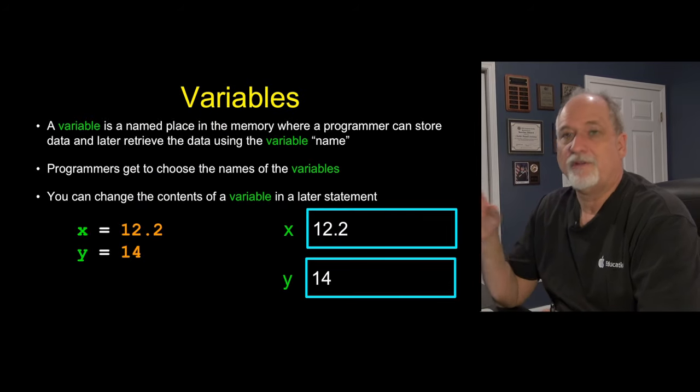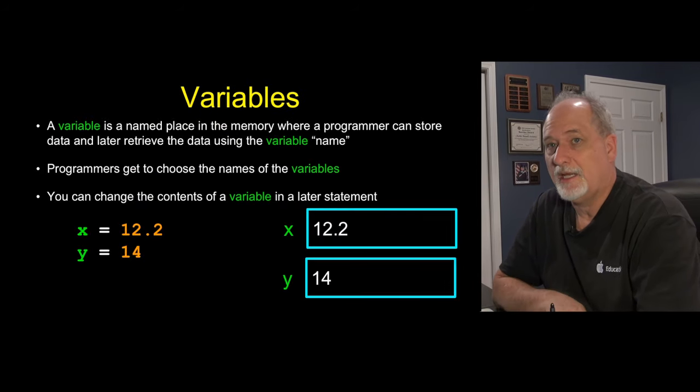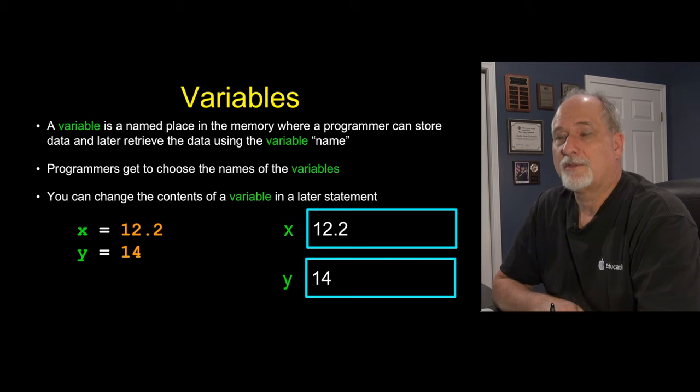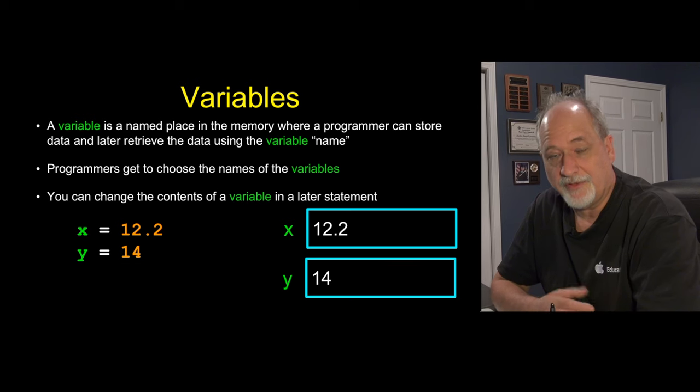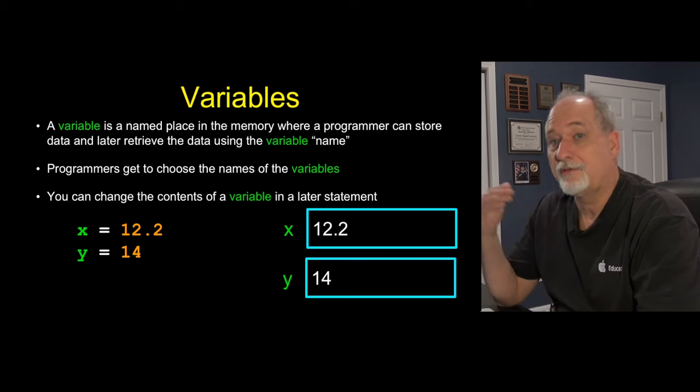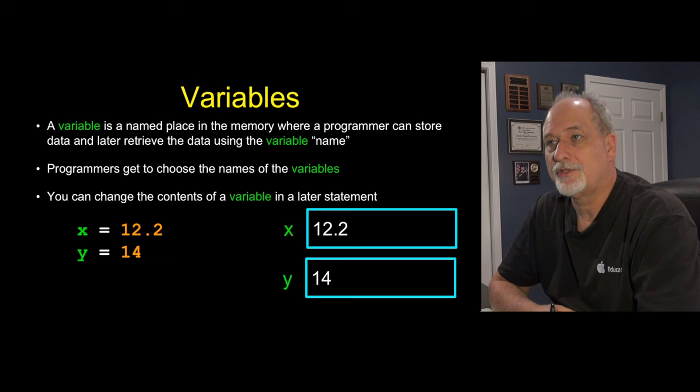Variables are the third building block. And that is a way that you can ask Python to allocate a piece of memory and then give it a name. And you can put stuff in that. Sometimes you just put one value, later we'll see when we do collections in chapters eight and nine, we will see that more than one value can be put into a variable.